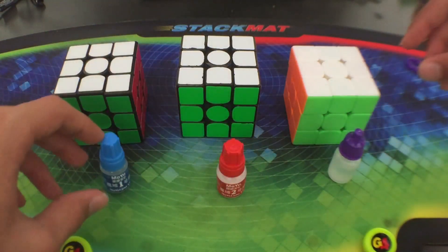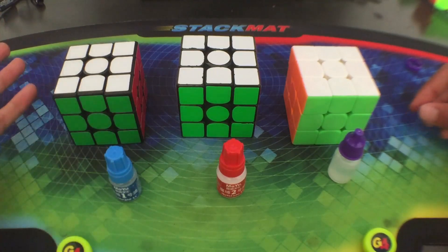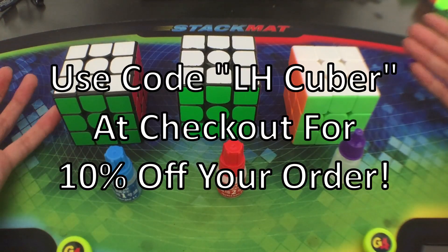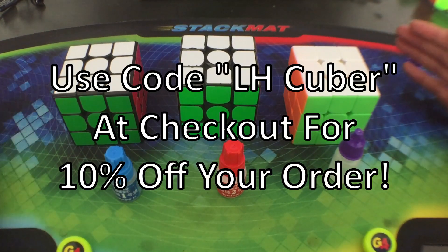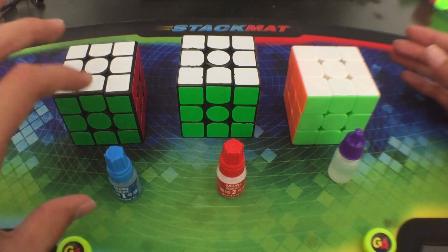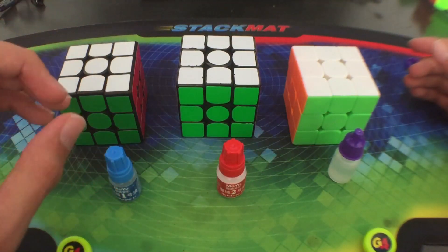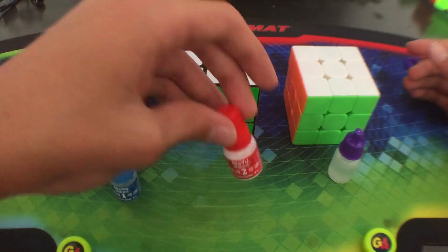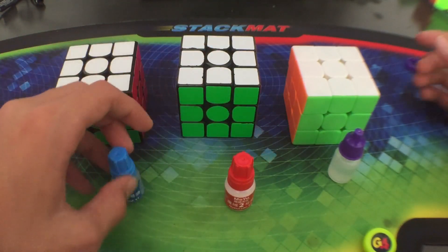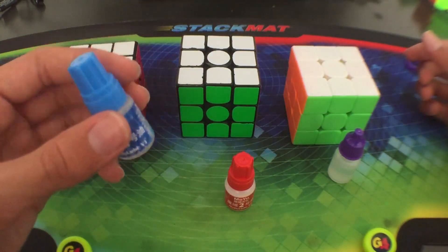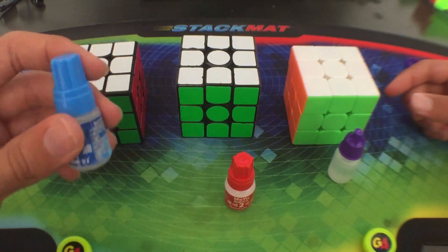And if you use code LHcuber at checkout you get 10% off your entire order. If I would have picked one, I'd probably pick number two, or maybe number one actually. Probably number one as it sort of does make it faster too. It's got pretty much the entire package.